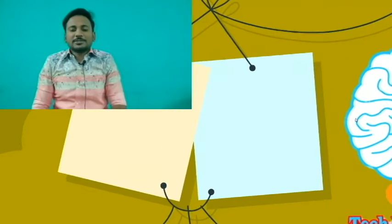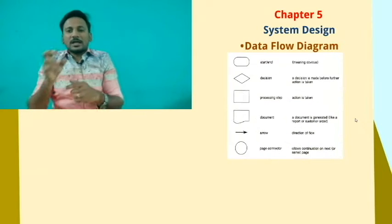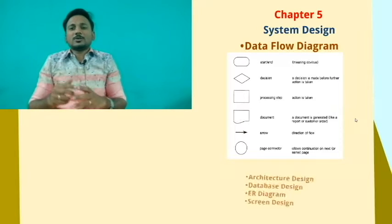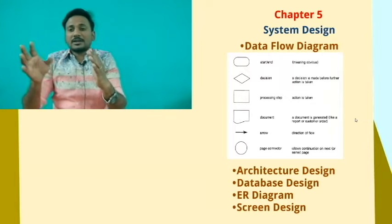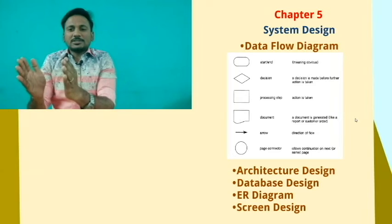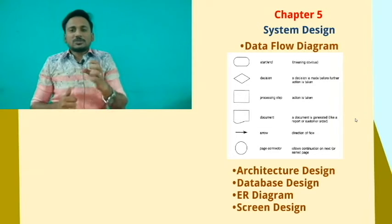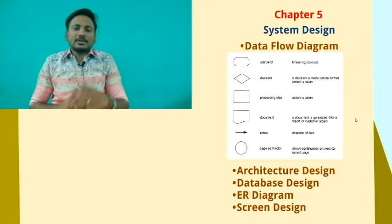The fifth chapter is System Design, with several components. The first is Data Flow Diagram, where you represent the flow of your entire project. The second is Architecture Design, covering Client Tier, Business Tier, and Database Tier — representing client-side, business logic, and database layers. The third is Database Design, where you represent the tables in your database.